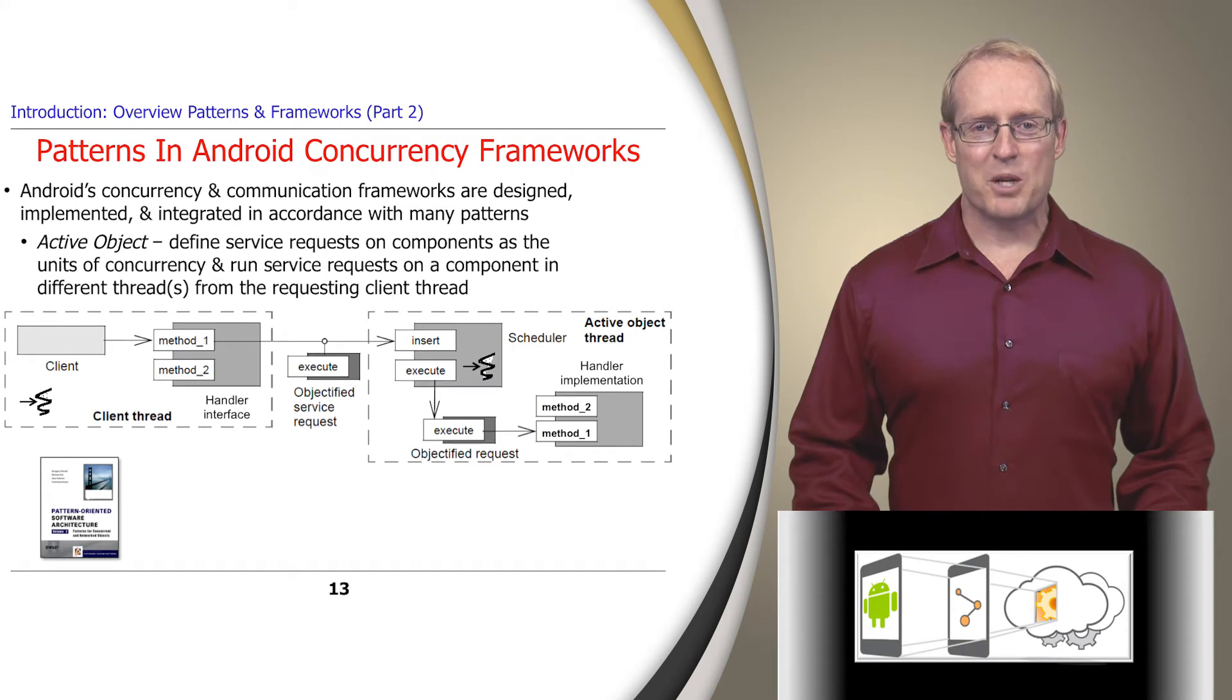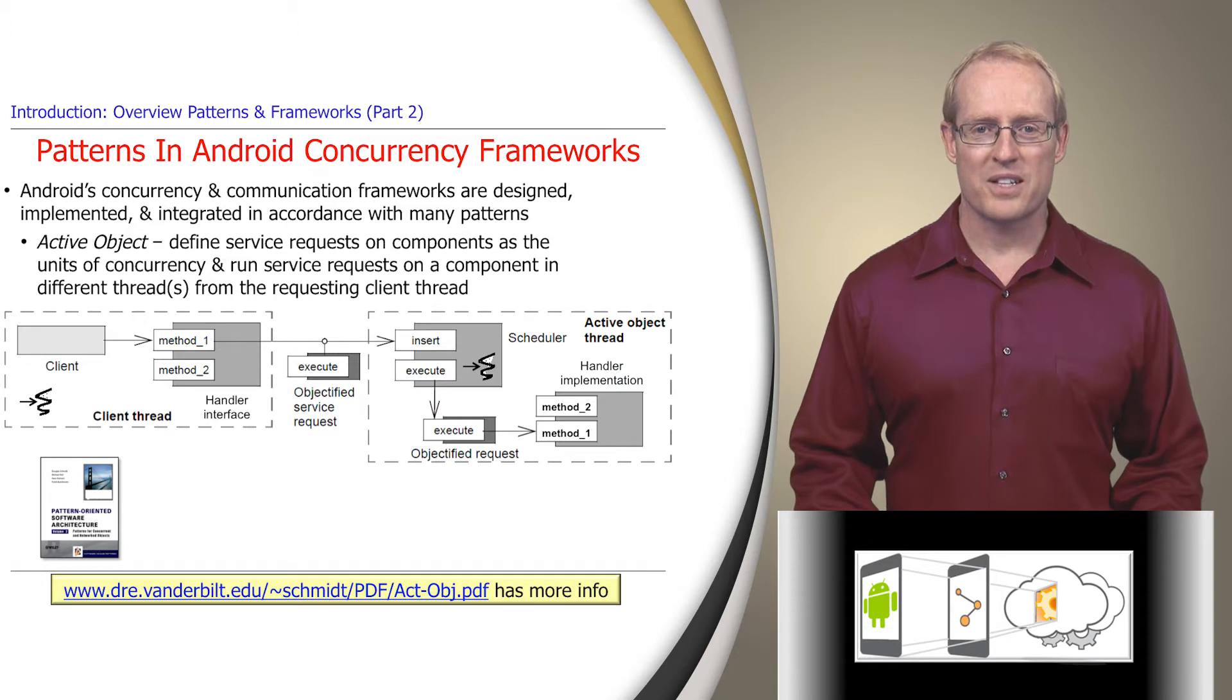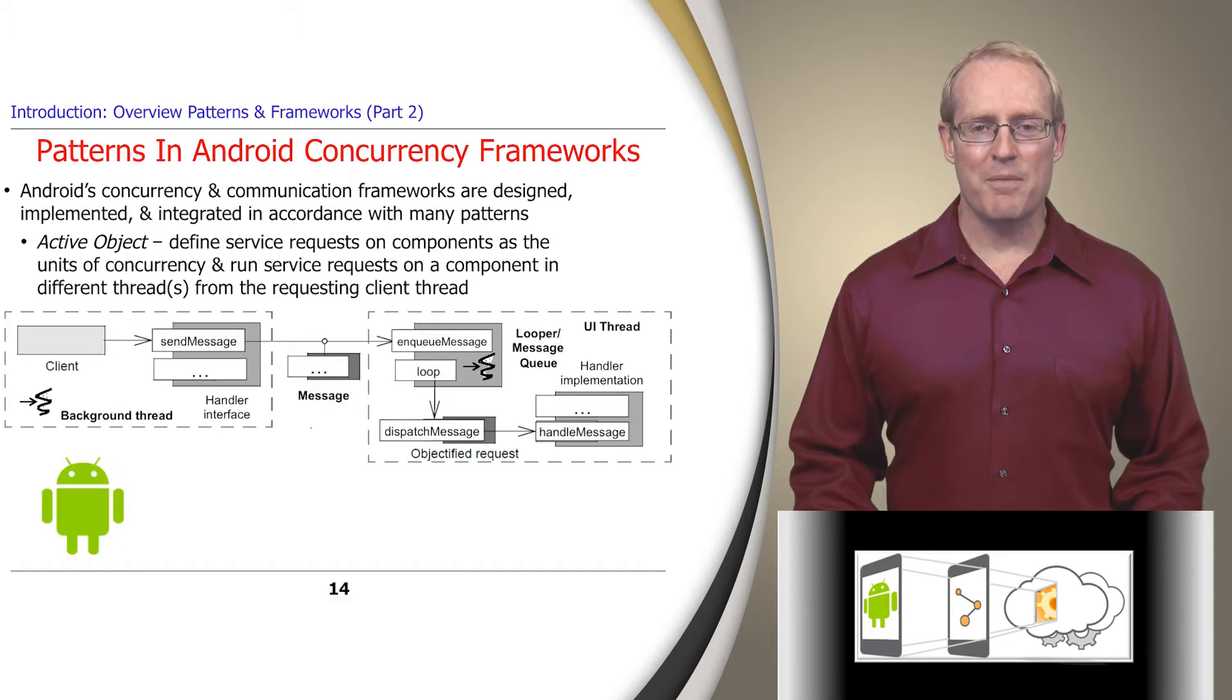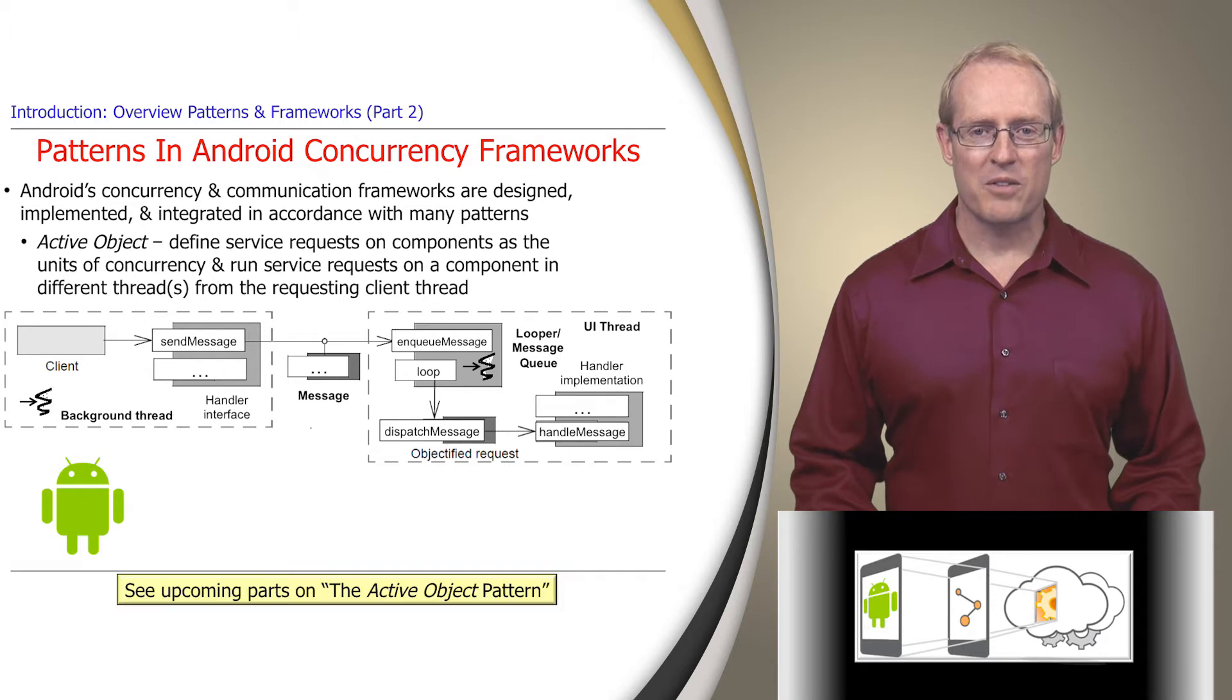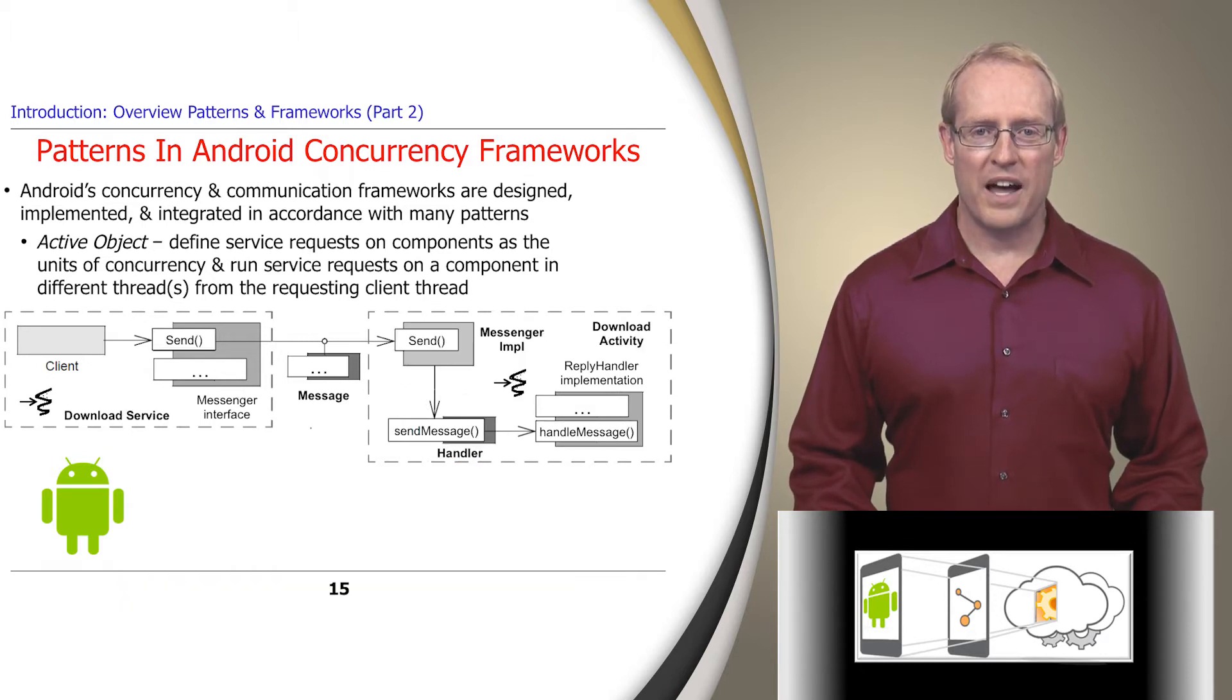The active object pattern defines the units of concurrency on a component to be requests for service. These service requests are processed in a different thread than the client thread that invoked the requests. The Android Handler framework applies a variant to this pattern to enable a client in one thread to send messages to a handler running in another thread. Android also applies this pattern via its binder communication framework, which uses messengers to enable message-based interactions across processes.